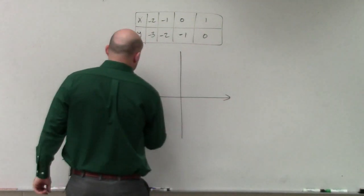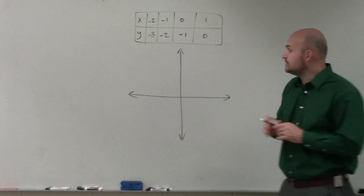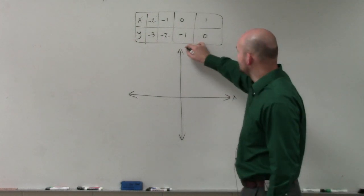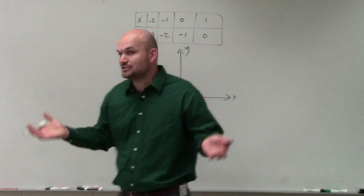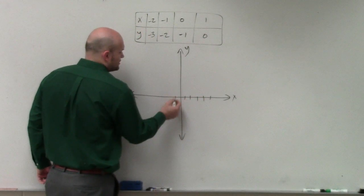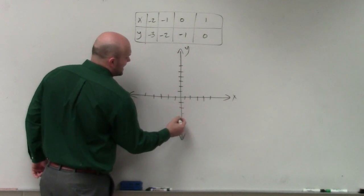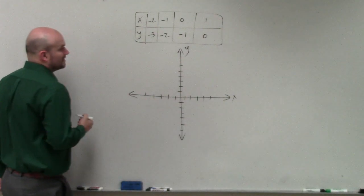So remember, when plotting points, when you first learn how to graph, the first thing we did is we said, here's the x-axis, here's the y-axis. Basically just two number lines. Going to the right would be positive on the x-axis, and going up would be positive on the y-axis. Down is negative, and to the left is negative.